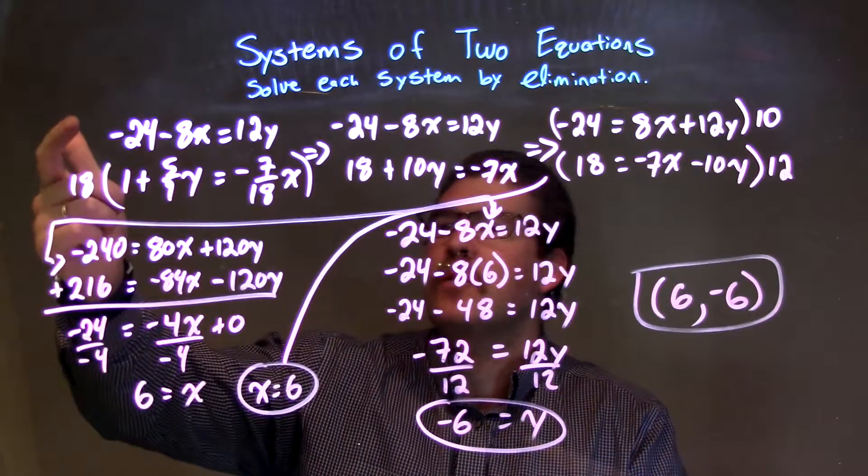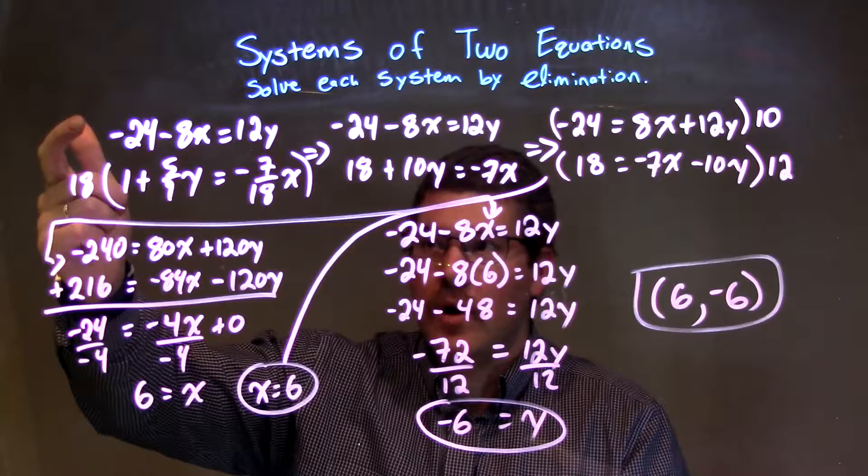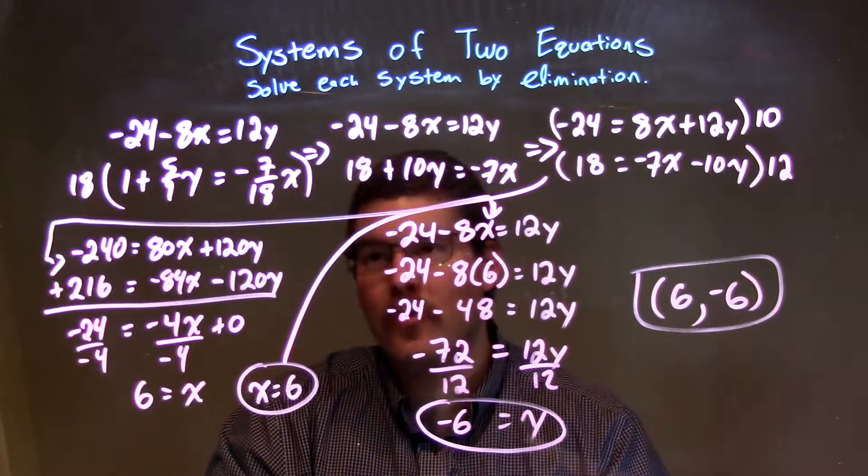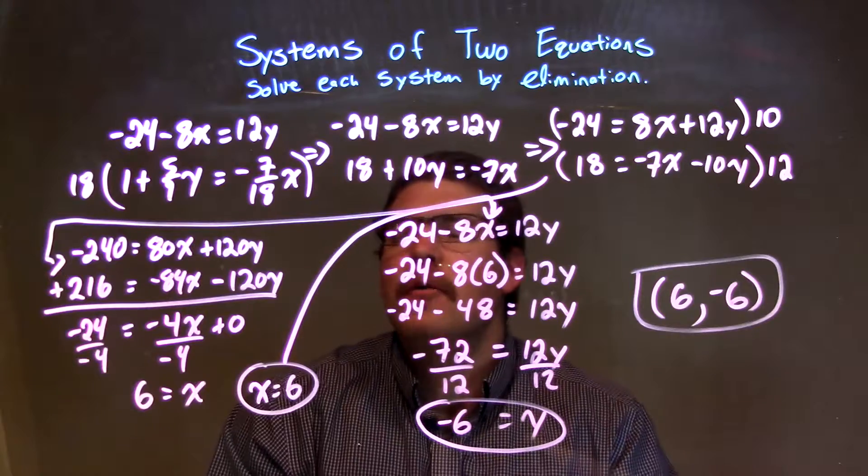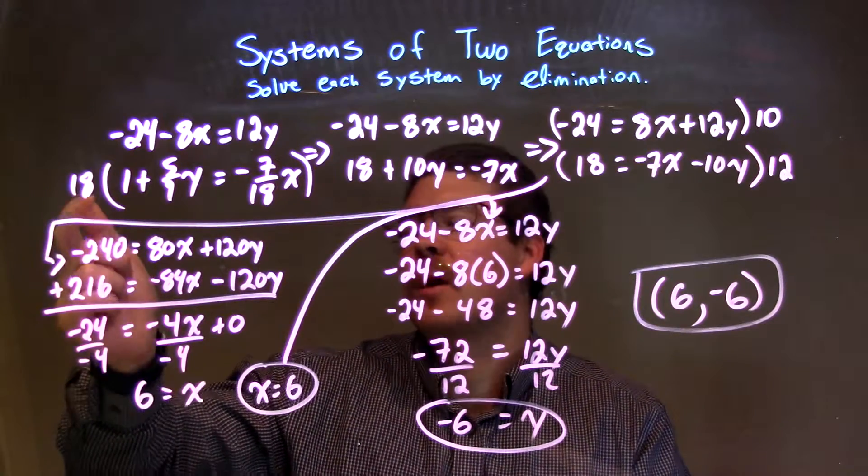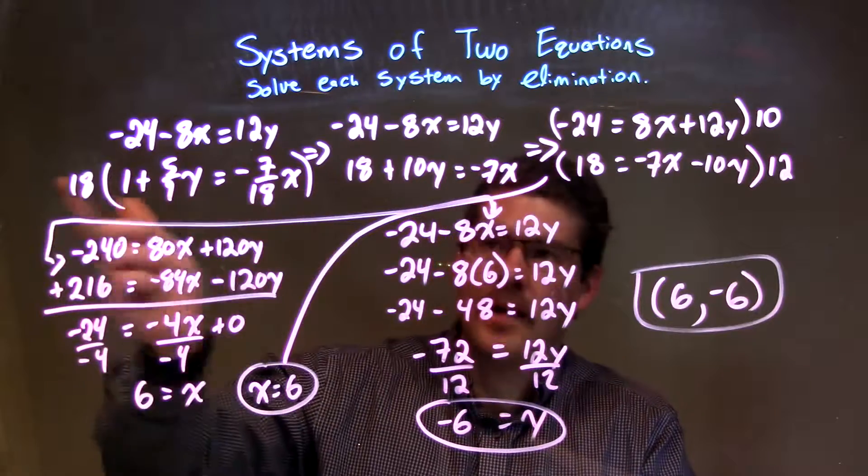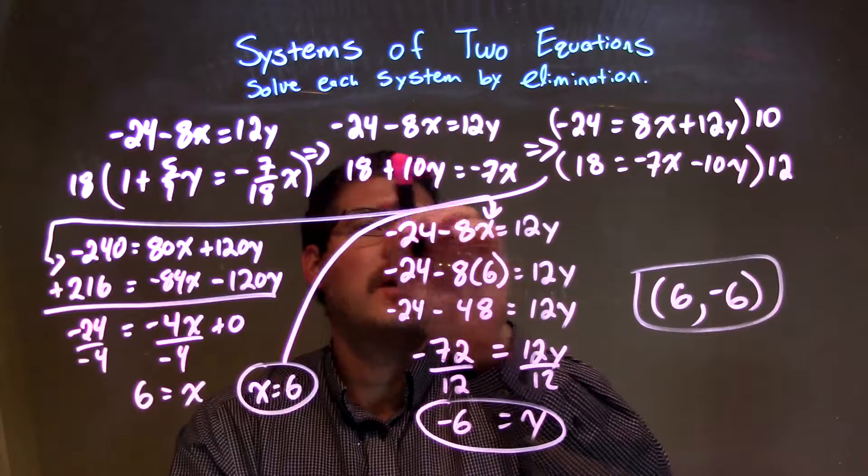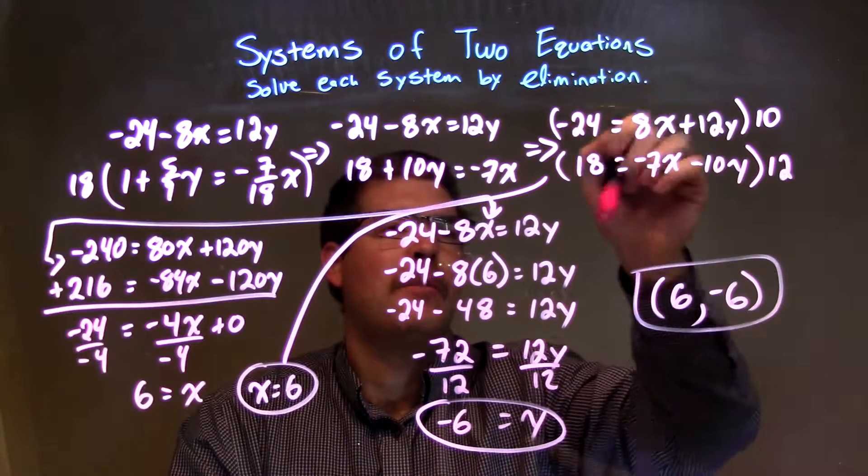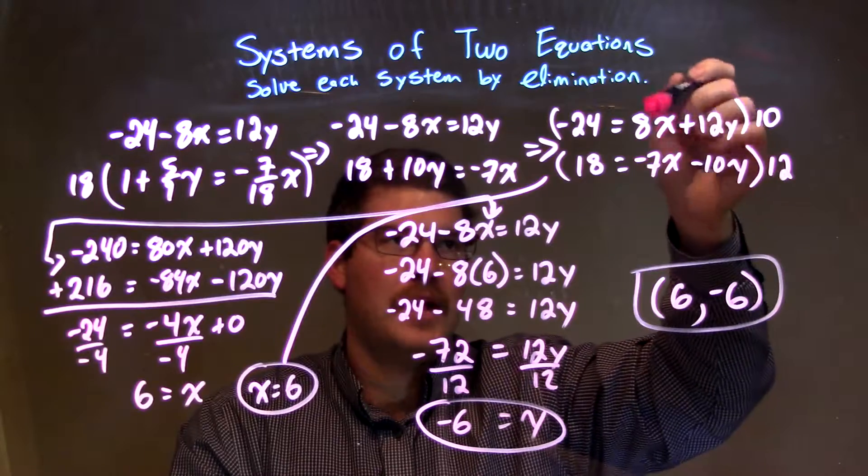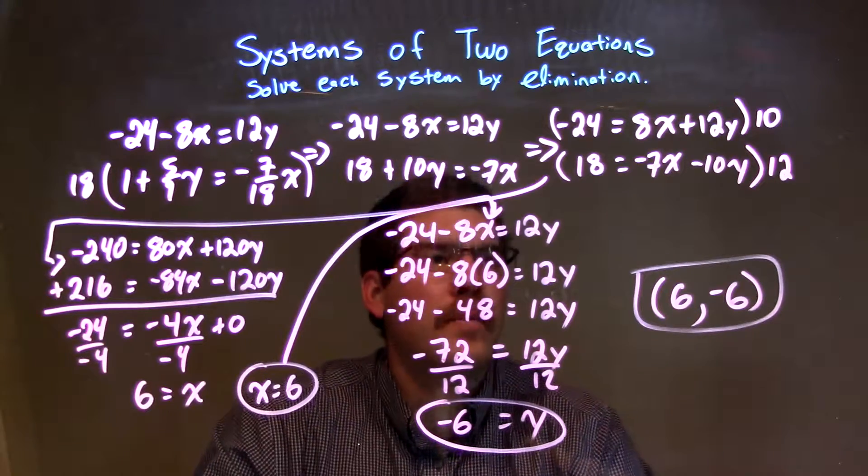So, let's recap. We're given negative 24 minus 8x equals 12y, and 1 plus 5/9 y equals negative 7/18 x. The first thing I did is, I don't really like fractions for these types of problems. So, I multiplied everything by the denominator by 18 to eliminate the fraction to have a better picture of this. From there, I rearranged and had everything lined up. I had my number equal to the variables, x first and the y's.